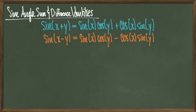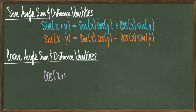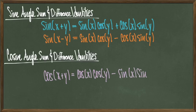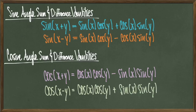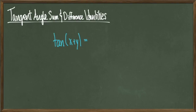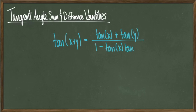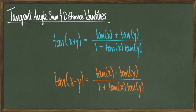Up to sign, these identities look pretty similar. We've also got the corresponding cosine angle sum and difference identities: cosine of x plus y equals cosine of x times cosine of y minus sine of x times sine of y, and cosine of x minus y equals cosine of x times cosine of y plus sine of x times sine of y. We also have similar identities for tangent: tangent of x plus y equals tangent of x plus tangent of y over 1 minus tangent of x times tangent of y, and tangent of x minus y equals tangent of x minus tangent of y over 1 plus tangent of x times tangent of y.